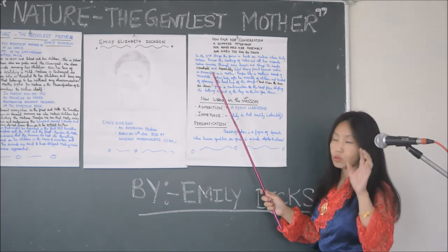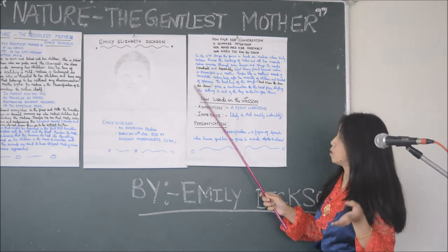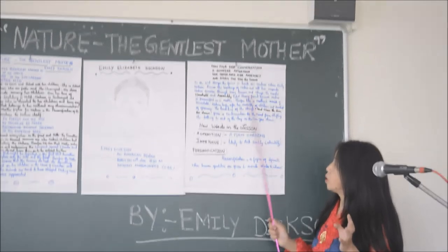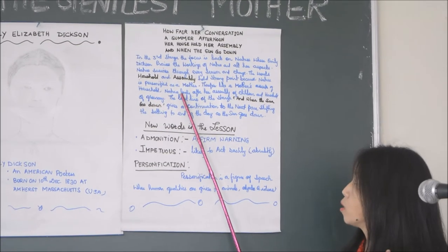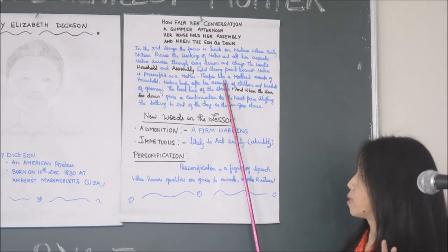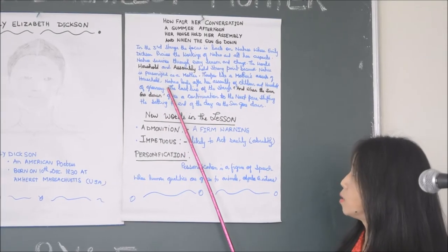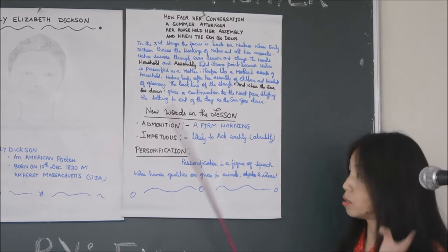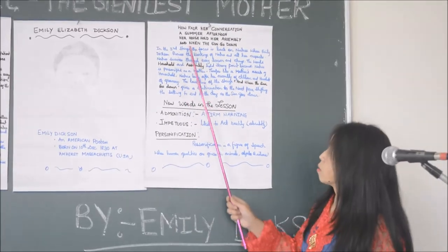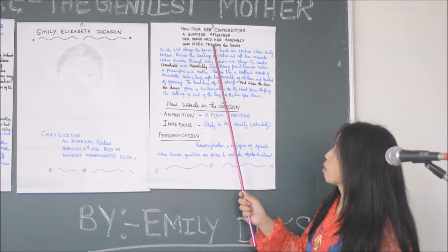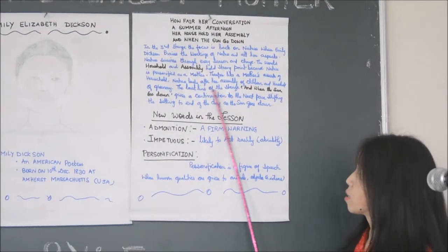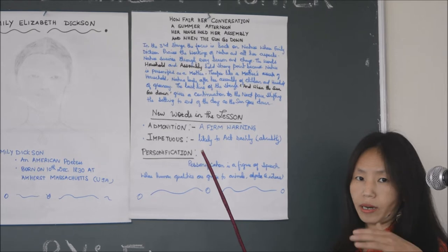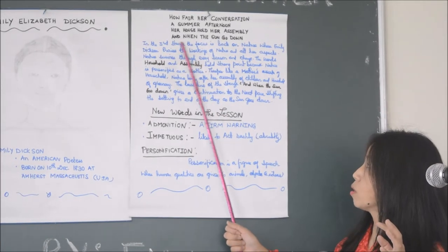Two key words in the third stanza: 'household' and 'assembly.' Since nature is personified as a mother, like a mother managing her household, nature looks after her assembly. 'Assembly' means her children — all living things. 'Household' refers to the green areas: hills, trees, and plants. The last line, 'and when the sun goes down,' gives a continuation into the next stanza.